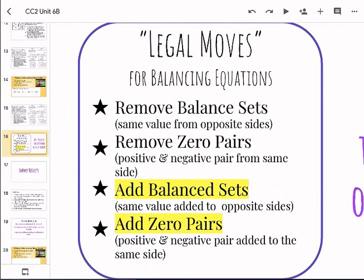So these are the four. Either we can remove balanced sets, which means we're taking the exact same value from opposite sides of the mat. So something from side A, something from side B. The next one is removing zero pairs. That's a positive and a negative pair of the same tiles, so either the ones, a positive and negative one, a positive or negative x, but those have to be from the same side. So like mat A or mat B.